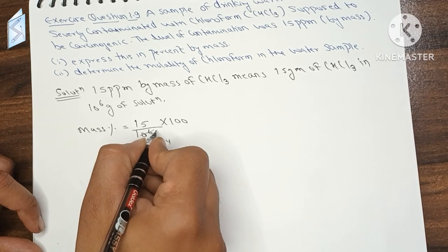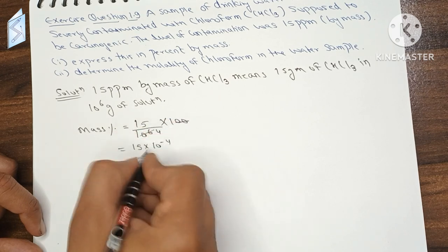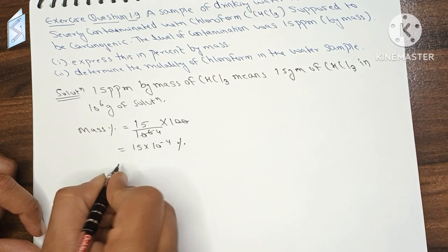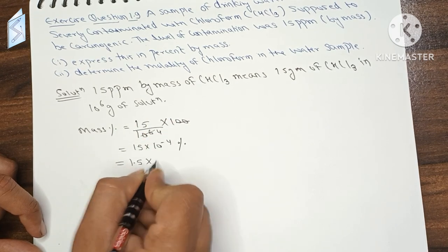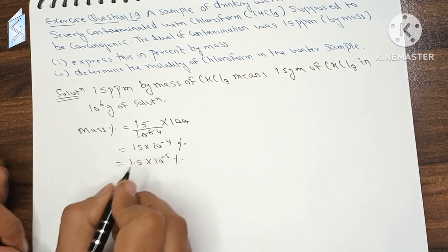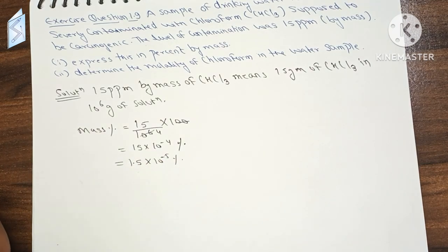If we cut two zeros, this gives us 10 to power minus 4 percent. In standard form, it will be 1.5 into 10 to power minus 3 percent. This is our mass percentage.